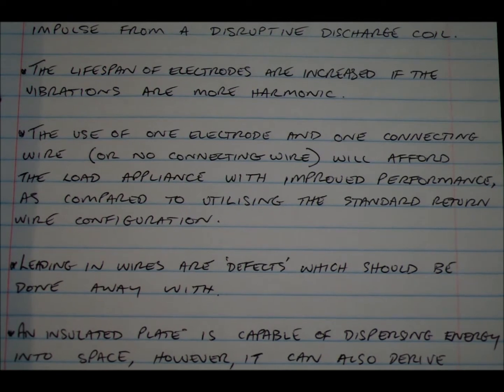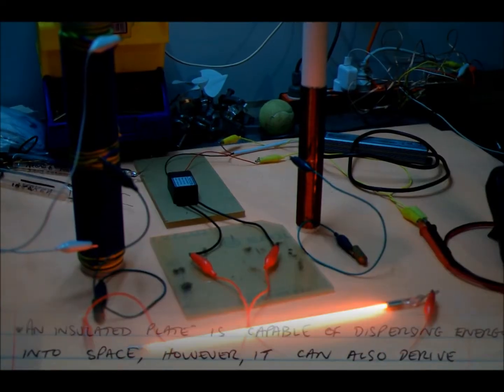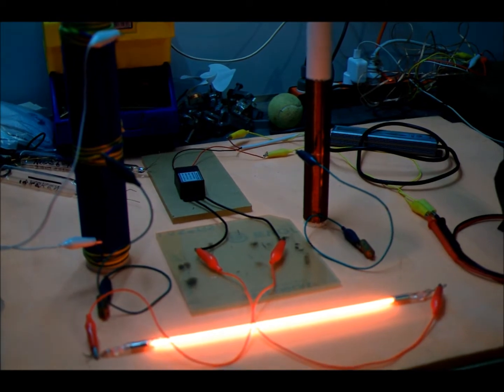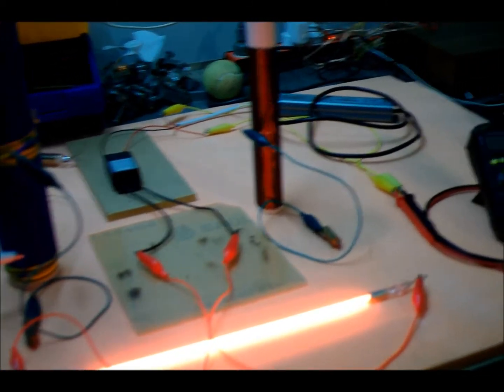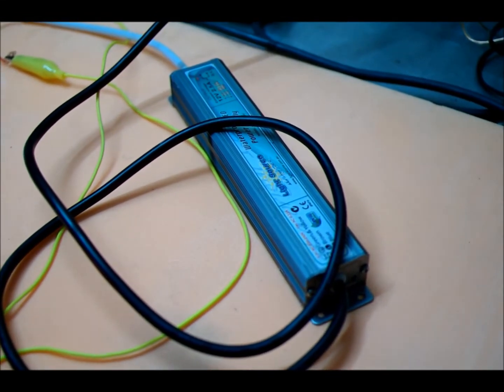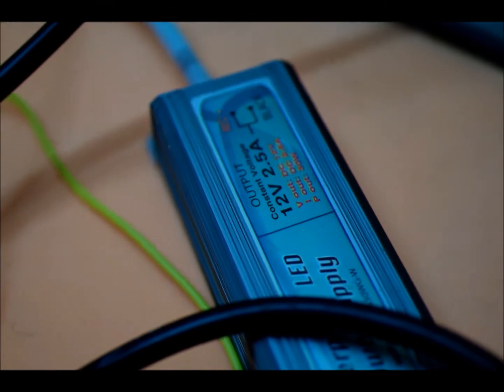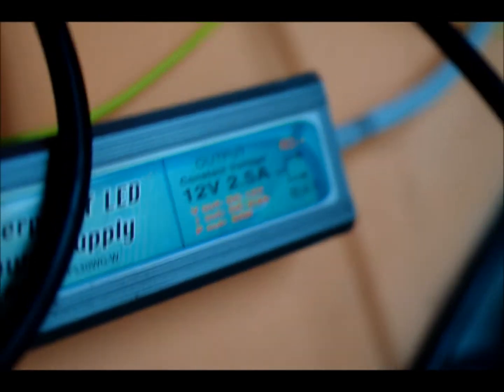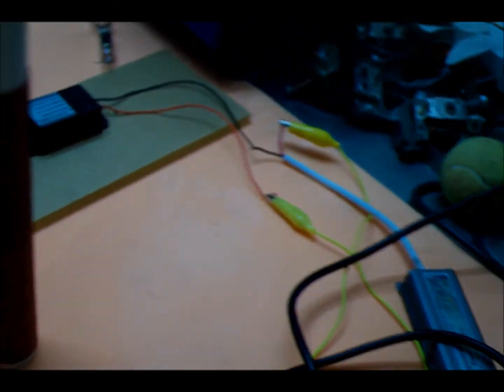On to the experiment with single electrodes and high frequency. Okay, what you're looking at here is not a single electrode setup unfortunately. This is a standard neon sign system. We have a standard 12 volt power supply converting line frequency AC into 12 volts at 2.5 amps.